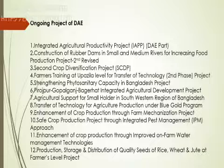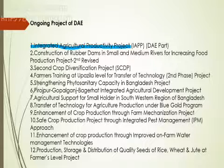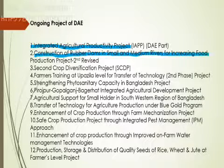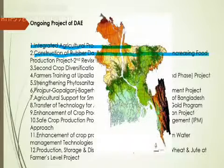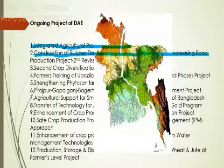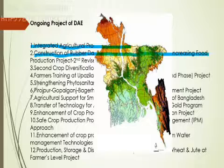My department has different types of projects running. For example, project number one is the Integrated Agricultural Productivity Project, which works all over the country. Project number two is the construction of rubber dams in small and medium rivers for increasing food production. Rubber dams are not suitable for all areas — there are specific areas, and we get evidence on which area is suitable. Looking at the map, the blue area is mainly saline-affected, the blackish area is hilly, the green part is highly productive, and the northern reddish part has a kind of desert. We get evidence on which technology best fits which part of the country and then implement it.